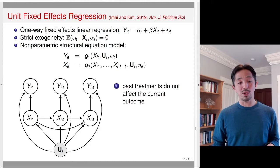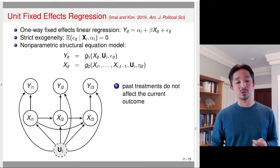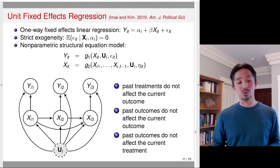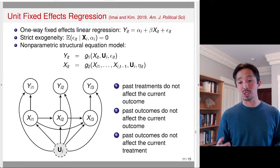There are three assumptions you might notice in this DAG representation of the one-way fixed effects model. First, past treatments do not affect the current outcome — there is no arrow from the past treatment to the current outcome, so x1_i doesn't affect y2 or y3. Second, past outcomes do not affect the current outcome — no arrow from y1 to y2 or y3. Third, past outcomes do not affect the current treatment — no arrow from y1 to x2, for example.